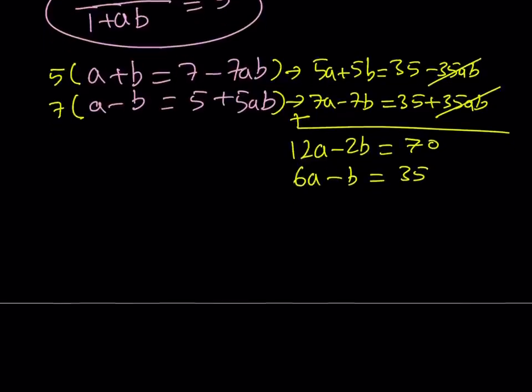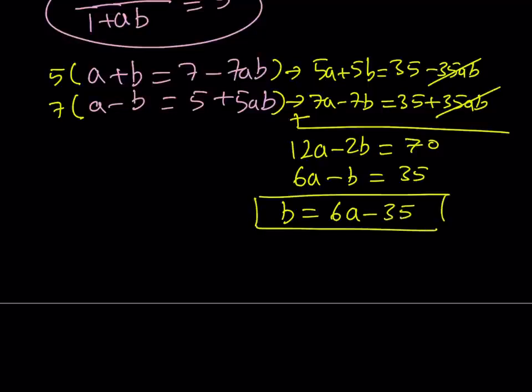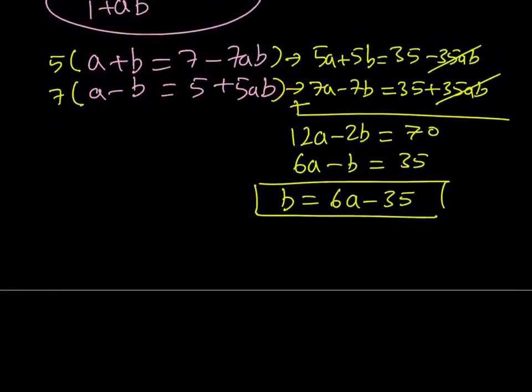From here we can divide everything by 2: 6a minus b equals 35. And here it's very easy to isolate b. Let's write b as 6a minus 35. This is nice because we were able to express b in terms of a, but it's only after we eliminate the ab term, because without it it would be more complicated.